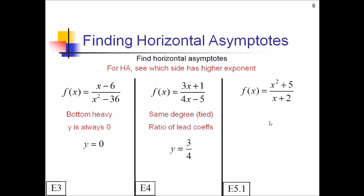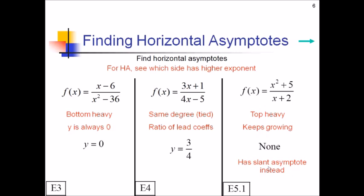The last case is top-heavy. If your numerator keeps getting bigger and bigger, your fraction just keeps growing without any bounds. So in this case you're not going to have any horizontal asymptote. But that doesn't mean you have no asymptote at all — it means you have something called a slant asymptote.